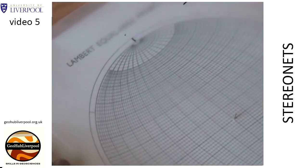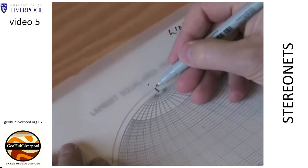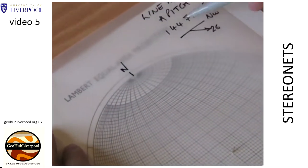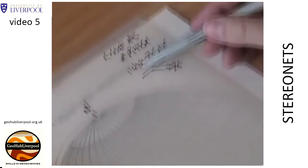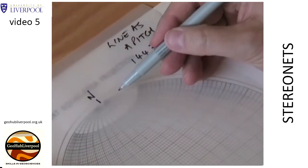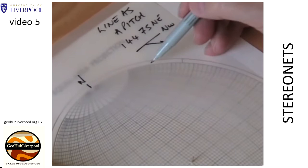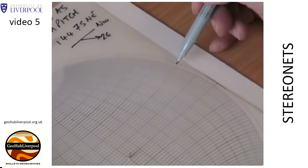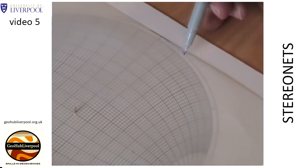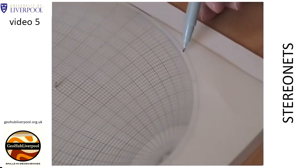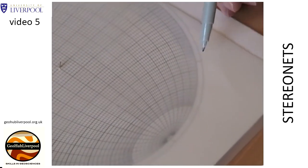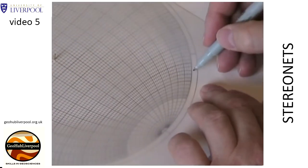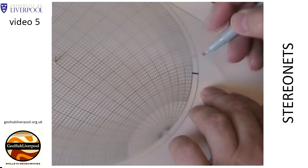Mark the North Pole on the tracing paper. Count 144 degrees around the primitive circle. Remember the heavy lines are at 10 degrees and that subdivisions are at 2 degrees. Mark on the tracing paper the strike of the plane.